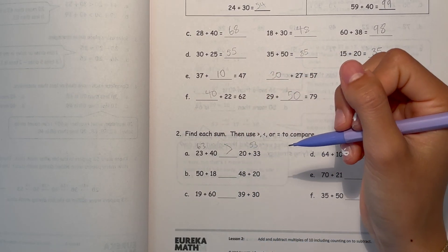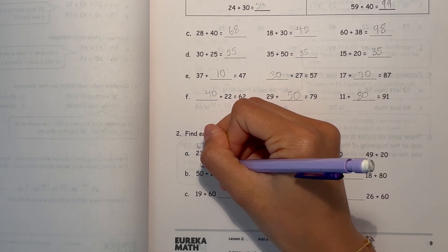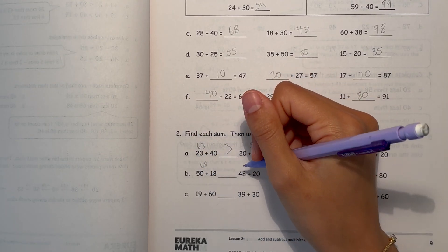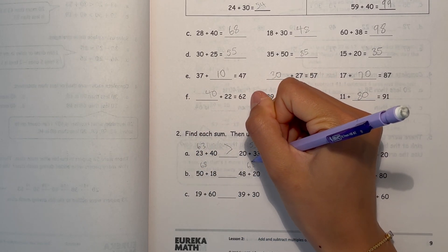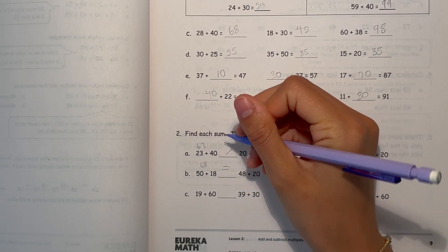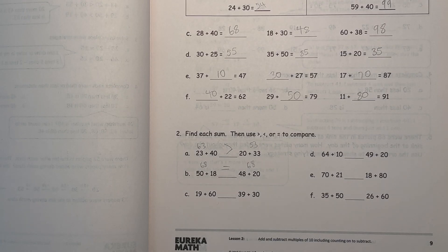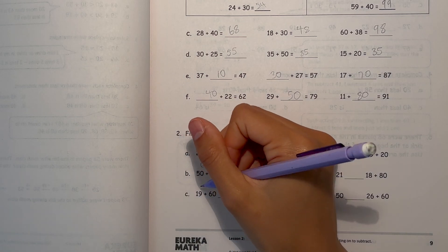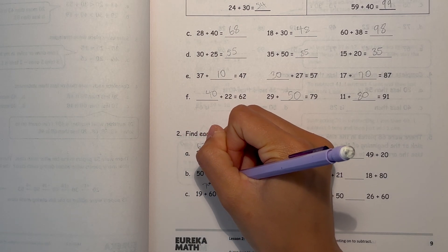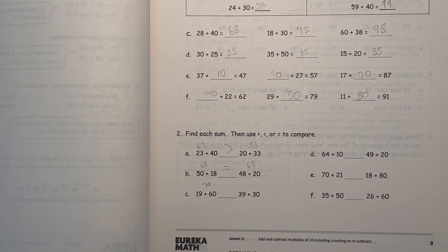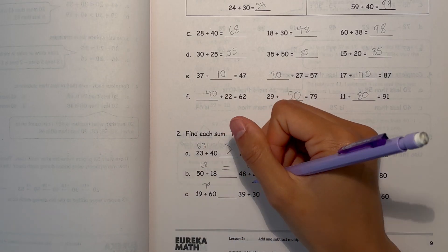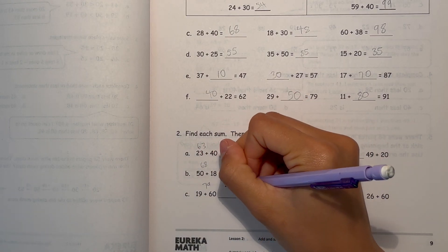Alright, now B, 50 plus 18, that's 68. 48 plus 20, that's also 68. So these two are equal. And now C, 19 plus 60 is 79. And 39 plus 30, that's 69. So 79 is greater.